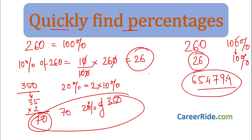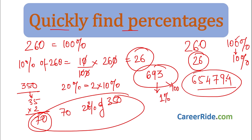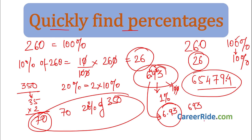Take 693 — find 1% of this. This is 100% and we want 1%, so there are two zeros less from the right-hand side. Put two decimal places. So 6.93 is 1% of 693. You can now find 1%, 10%, 20% very easily.